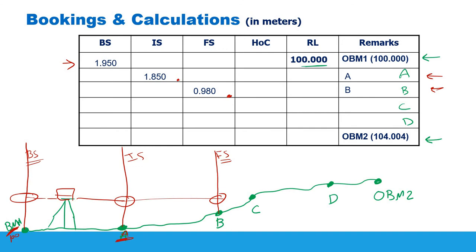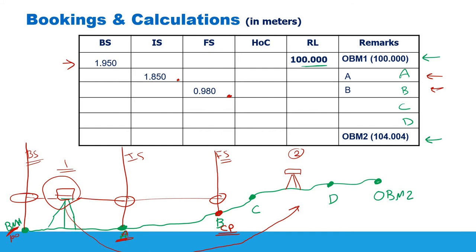Now we've done all of our readings from Station 1 of the level, and we are going to move to Station 2. Because we changed the location of the level after the reading over B, point B is called a change point. If you'd like more information about change points, intermediate sights, back sights, and fore sights, please review the previous two videos before continuing.